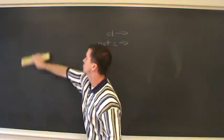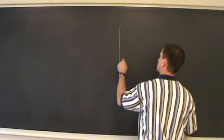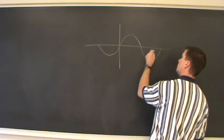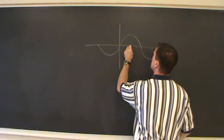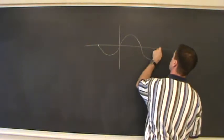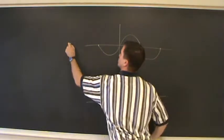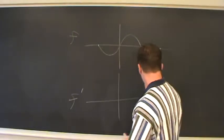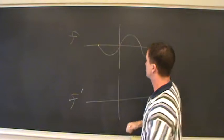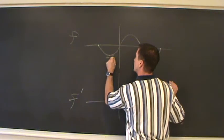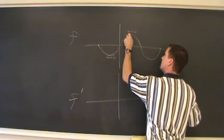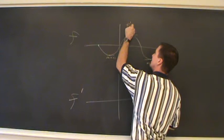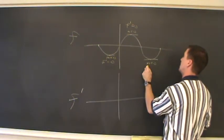Now I want to talk about graphing a function's derivative. I'll start with this function — if you know your trig, it may look very familiar. We'll call this f, and what we're going to do is graph f prime, its derivative. First, find where the slope of this function is zero. Right here the slope is zero, right here the slope is zero, and right here the slope is zero. That means f prime is zero at each of those points.